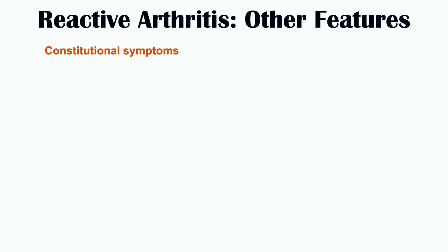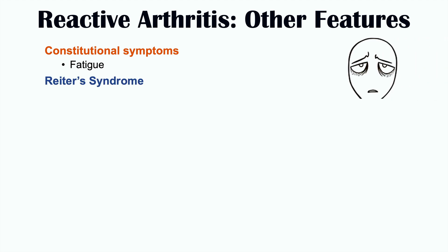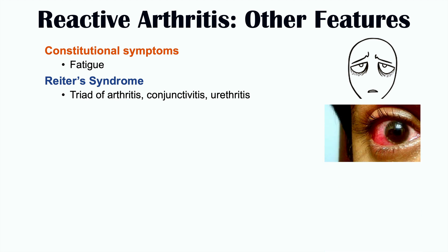Other important features include constitutional symptoms such as fatigue and fever. Reactive arthritis can progress to Reiter's Syndrome, which is a triad of arthritis, conjunctivitis (inflammation of the conjunctiva of the eyes), and urethritis (inflammation of the urethra, causing a burning sensation when urinating). If all three are present, this is highly suggestive of Reiter's Syndrome.